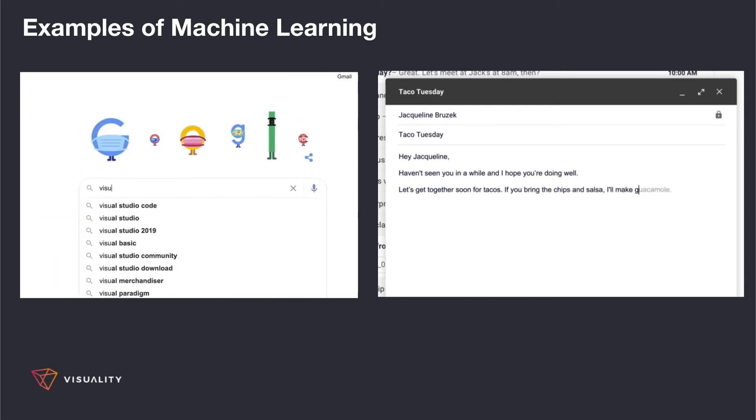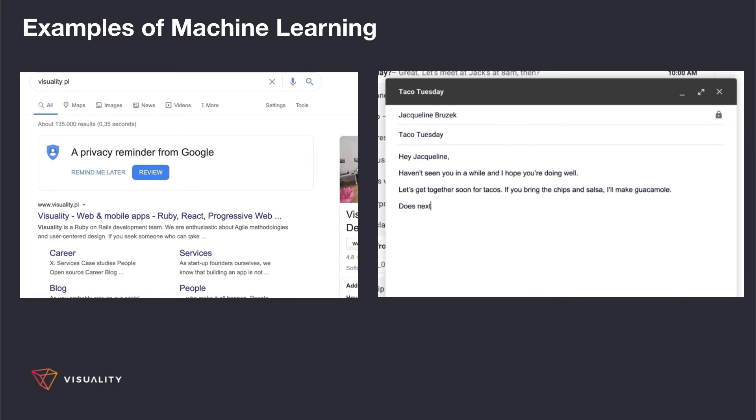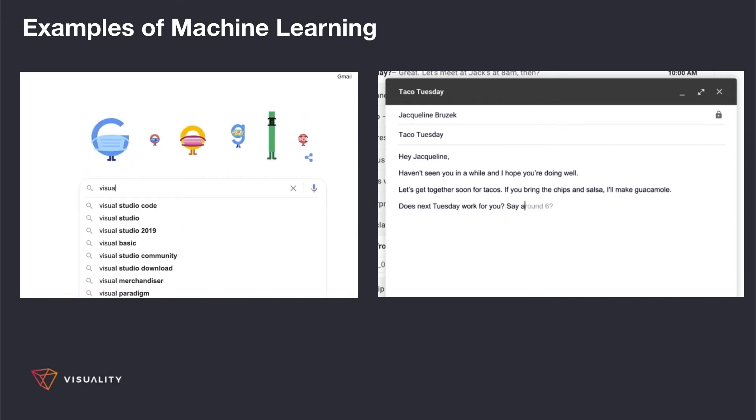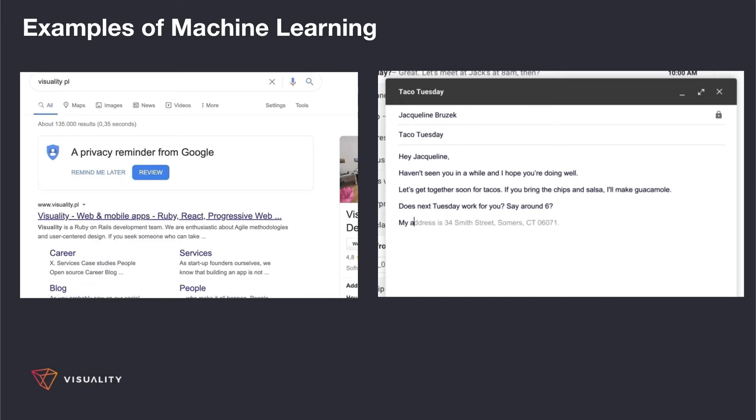It may not be immediately apparent that recommending the next video to watch is also powered by machine learning. Perhaps the biggest example of all is Google Search. Every time you use Google Search, you are using a system that has many machine learning systems at its core.